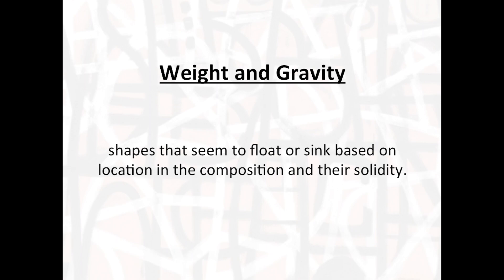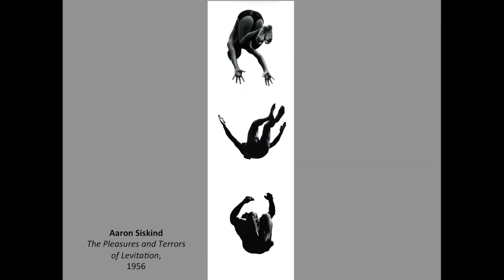Other elements of basic composition include weight and gravity. This includes shapes that seem to float or sink based on their place in the composition as well as their solidity. Aaron Siskind's photograph from 1956, from his series 'The Pleasures and Terrors of Levitation,' shows three people seemingly floating in the sky. Undoubtedly these were divers jumping off a diving board, but Siskind excluded that detail — no pool, no diving board, no features in the sky. We just see these people floating in blank white spaces. His title amplifies the emotional impact: it could be both fun and horrifying at the same time.